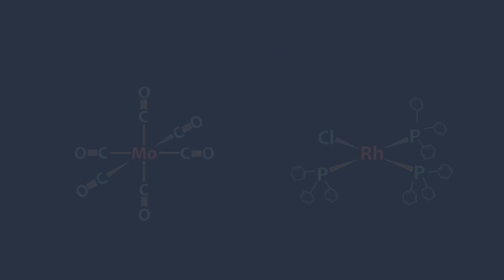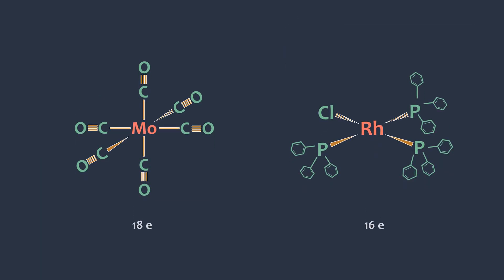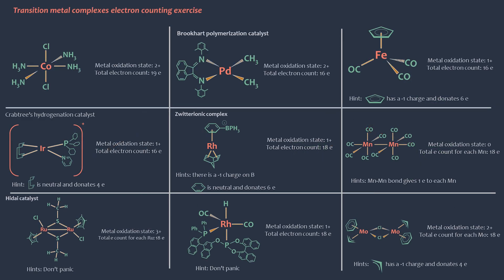Transition metal complexes with 18 valence electrons are typically stable. Complexes with fewer or more than 18 electrons tend to be more reactive. Of course, there are several exceptions for this rule, but counting electrons is one of the most fundamental ways to study the reactivity of transition metal complexes.